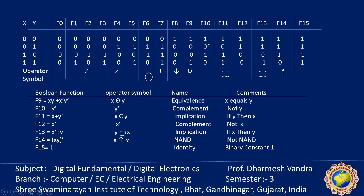F10 is 1,0,1,0 — it is simply the complement of y, indicated by y̅. F11 is 1,0,1,1 — that is x + y̅, known as implication: if y then x. F12 is 1,1,0,0 — the complement of x, indicated by x̅ (NOT x). F13 is 1,1,0,1 — that is x̅ + y (implication: if x then y). If x is 1, whatever value y has is implicated at the output.